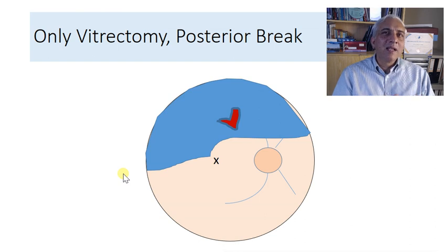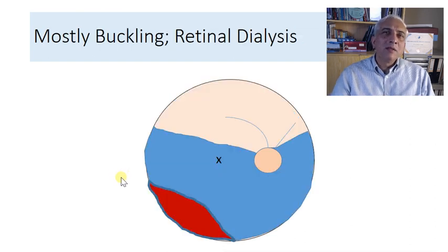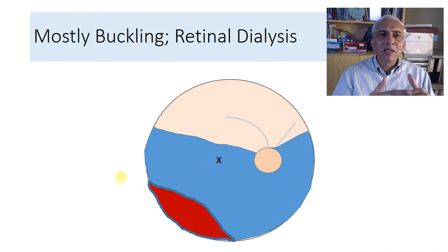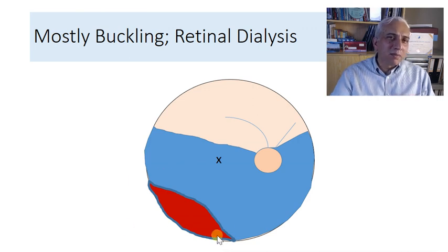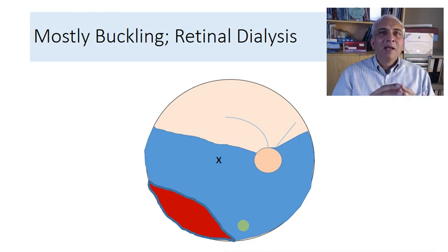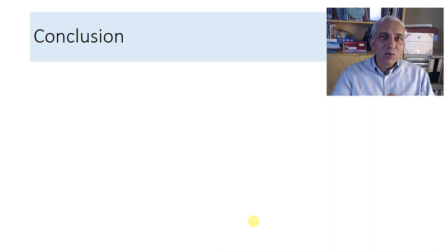In the scenario of dialysis — where the retina breaks from its adhesion at the ora serrata — the retina pushes backward but is still attached there, so a buckle can resolve the dialysis in most cases. If there are multiple inferior breaks, a combination of buckling plus pars plana vitrectomy is the ideal approach, especially with a bullous detachment. For a very shallow inferior detachment, a buckle alone would be the best approach.